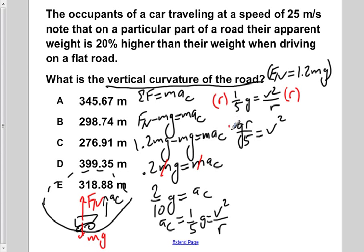Now if we multiply both sides by 5 over g, this would leave us with r equals 5 v squared over g, leaving us a simple equation in terms of r.